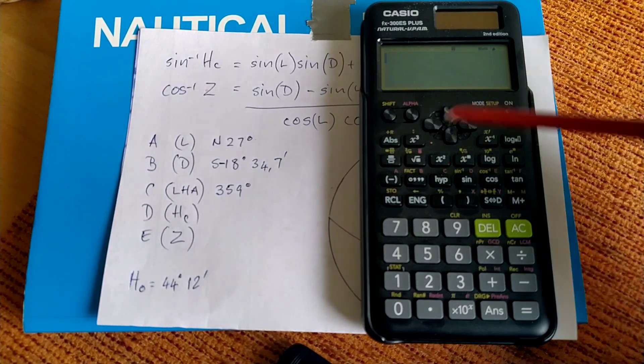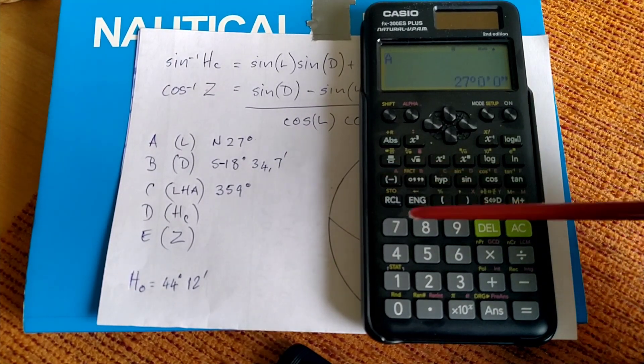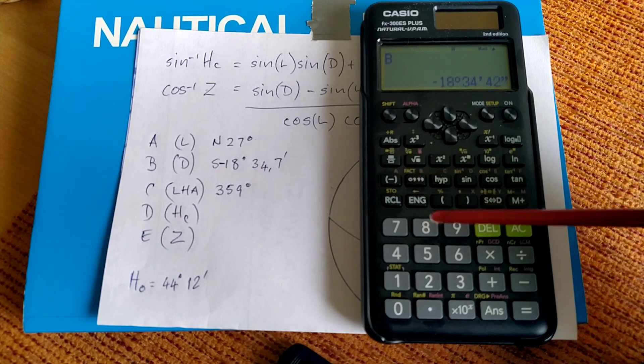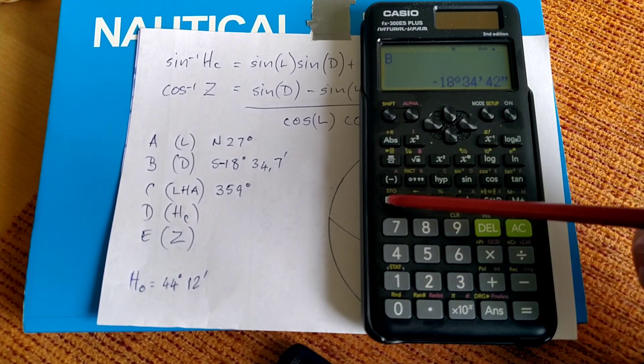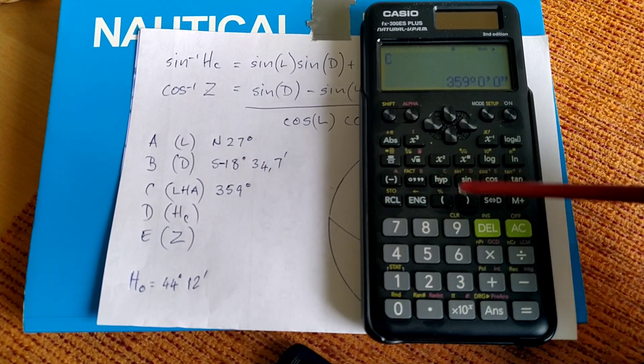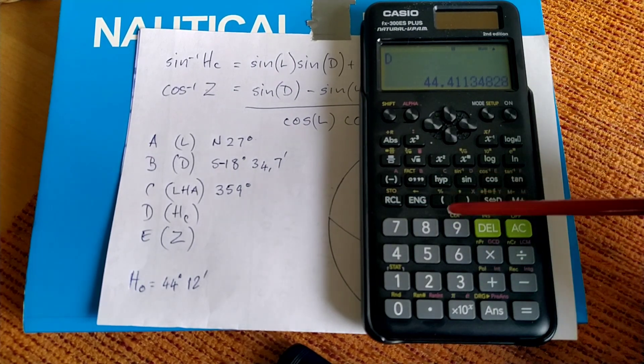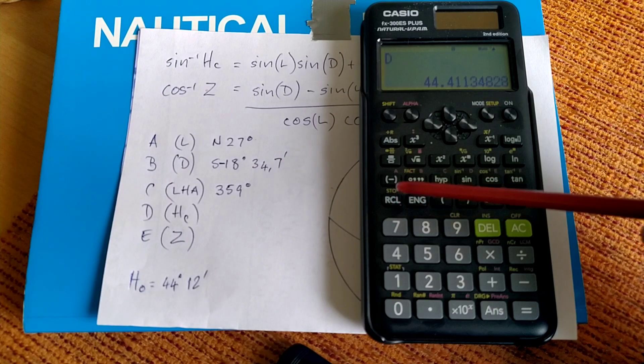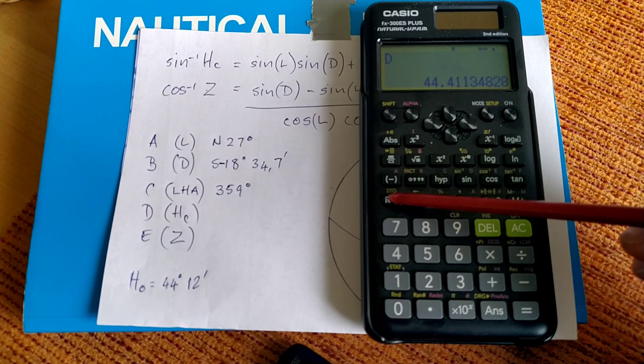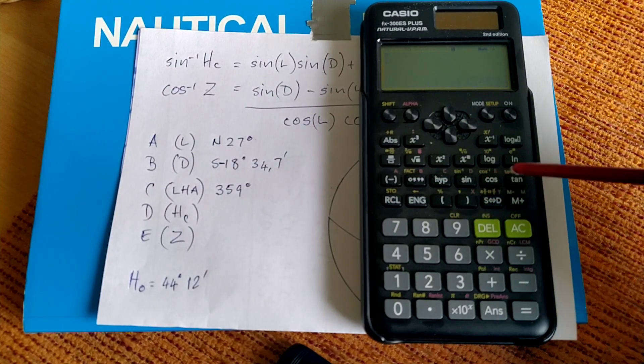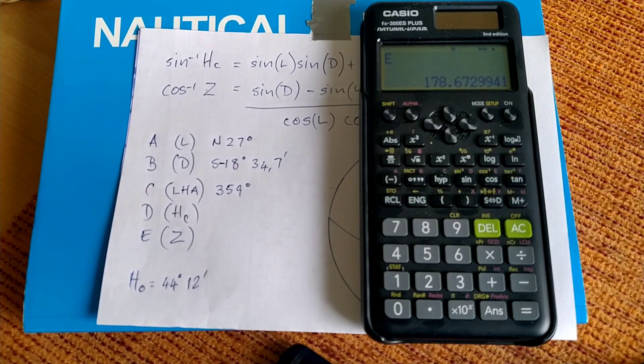And let's just see if we've still got everything. Recall A. That's our latitude. Recall B. That's our contrary name declination. Recall C. That was our LHA. Recall D. That was our angle HC, the computed altitude angle. And recall E. And that was our azimuth angle.